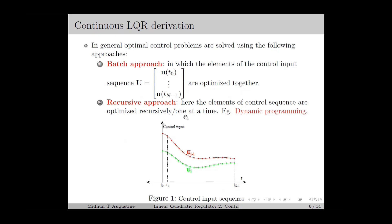In the recursive approach, the elements of the control sequence are optimized one at a time, and this is usually performed backwards in time. We start with tN-1 and optimize the corresponding control input, then go backwards to tN-2 and tN-3 up to t0. One of the major recursive approaches extensively used in optimal control problems is dynamic programming.